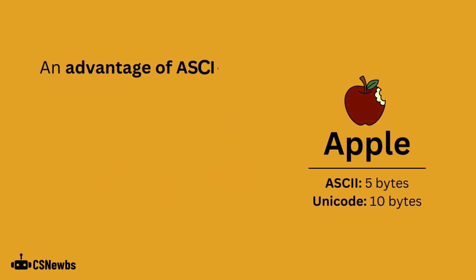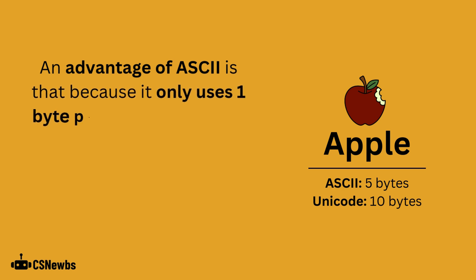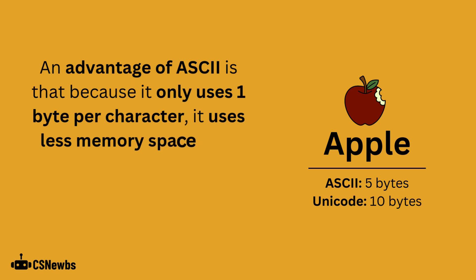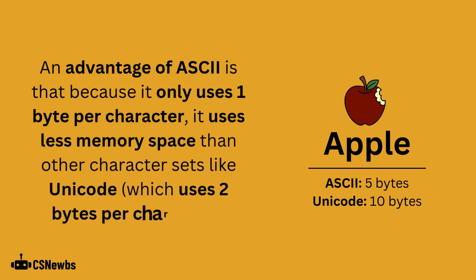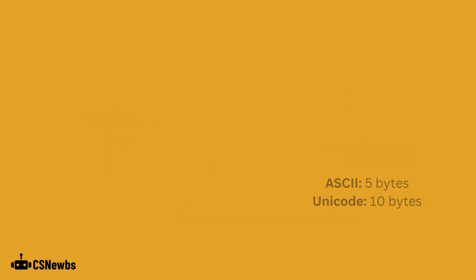An advantage of ASCII is that because it only uses one byte per character, it uses less memory space than other character sets like Unicode, which uses 2 bytes per character. In this example, 'Apple' would be represented in 5 bytes by ASCII, but in 10 bytes by Unicode.